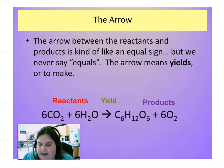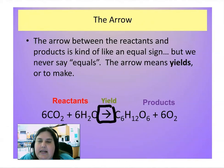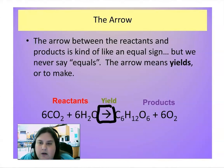In the middle we have an arrow, and this arrow is called a yield sign. The yield sign essentially means equals, but we don't say that — we say 'yields.' So for example, we would say the reactants yields the products, or like when I said the equation: 6CO2 plus 6H2O yields C6H12O6 plus 6O2.